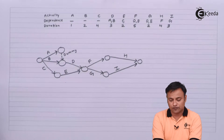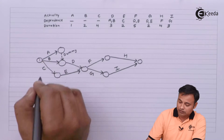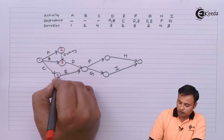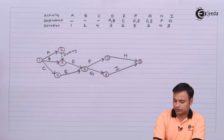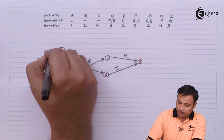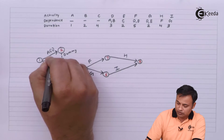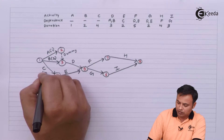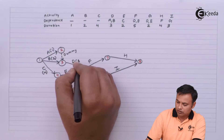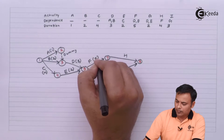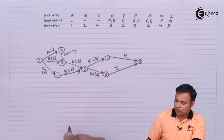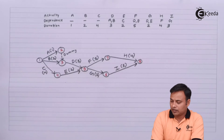I will put numbers to the nodes first. So the nodes will be 1, 2, 3, 4, 5, 6, 7 and 8. Then we put the durations: A = 1, B = 2, C = 4, D = 3, E = 2, F = 5, G = 2, H = 4 and I = 3. So we are done with the numbering and the durations.